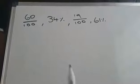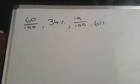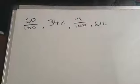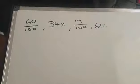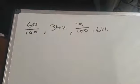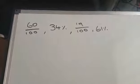Okay, we have 60 over 100, 34 percent, 19 over 100, and 61 percent. What we're going to do with these numbers is put them in lowest to highest form. Now how do we do this?